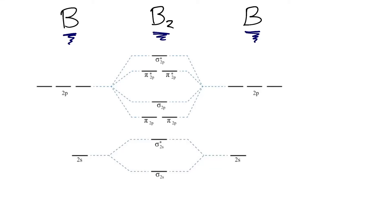How do you make the molecular orbital diagram for the molecule B2? Start by looking at the boron atom and writing out the electron configuration for each atom. By looking at the periodic table, we can see that the electron configuration for boron is 1s2, 2s2, 2p1.